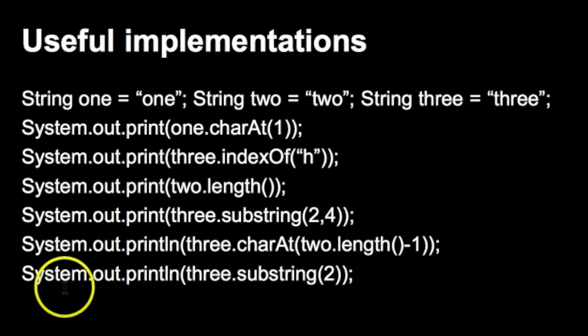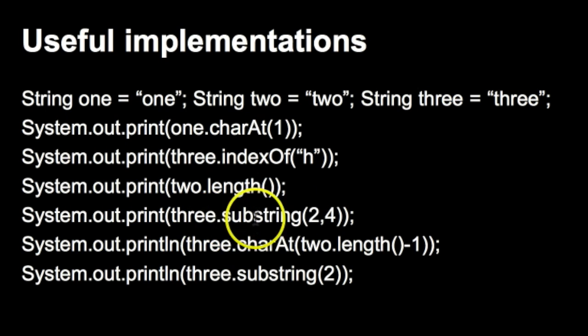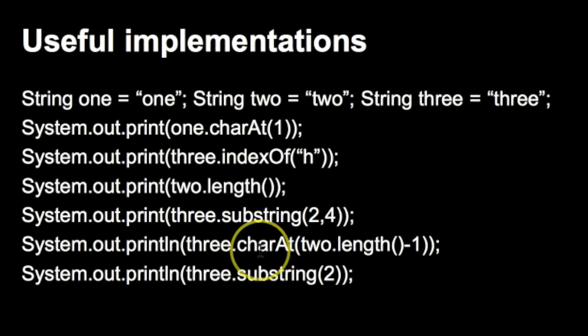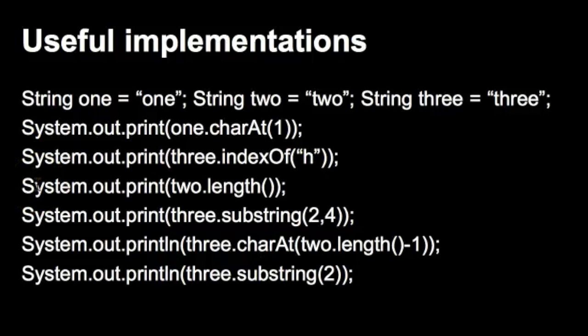Our next print statement says three.substring(2). Before, substring(2, 4) printed out 're'. In this example, three.substring(2) will print out 'ree' — it cuts everything before index 2 and goes all the way until the string is done. Hopefully those examples gave you some insight on these useful implementations, but obviously to understand them better you're going to need lots more practice.